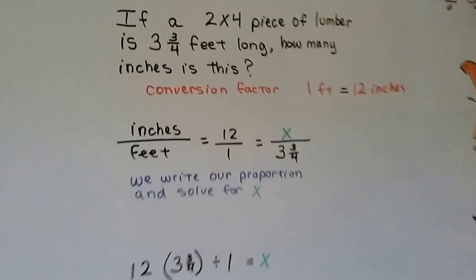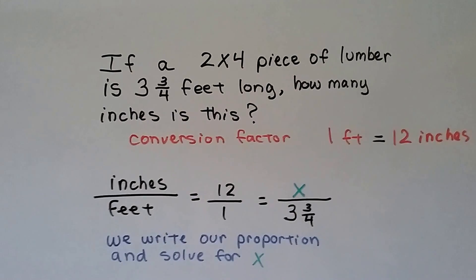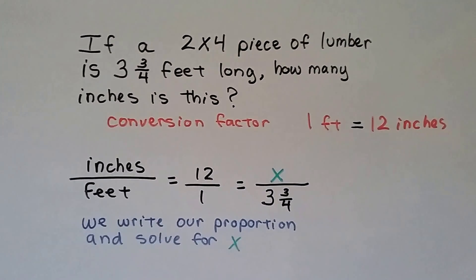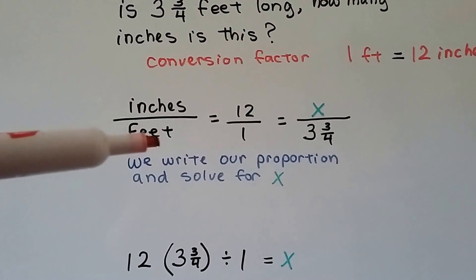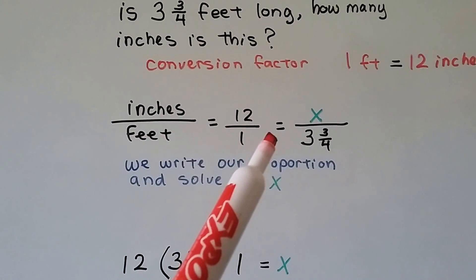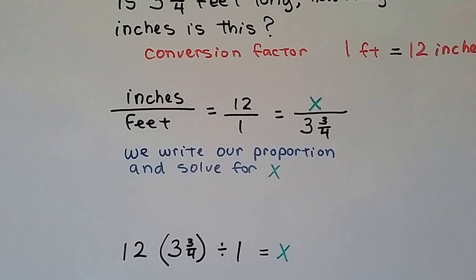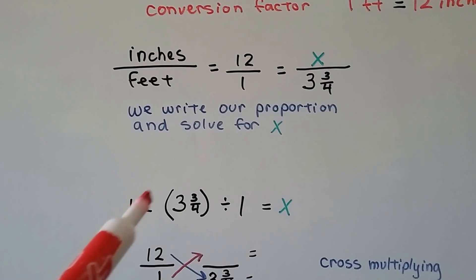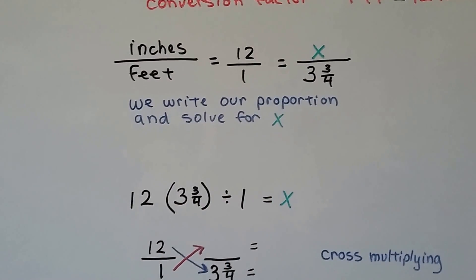Look at this one. If a 2 by 4 piece of lumber is 3 and 3 fourths feet long, how many inches is this? Well, the conversion factor is 1 foot equals 12 inches. We write our proportion. Inches over feet, 12 over 1, equals x over 3 and 3 fourths. We need to solve for x. So that would be 12 times 3 and 3 fourths divided by 1 equals x. That's the correct equation.